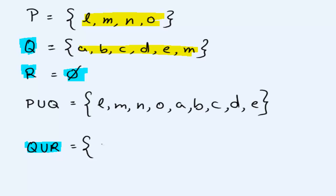So Q has elements A, B, C, D, E, and M in it. And all those elements are going into our union.